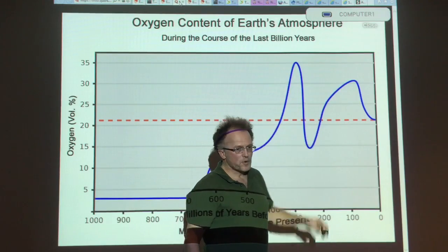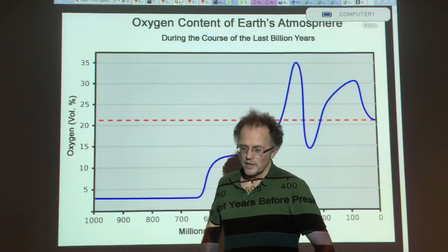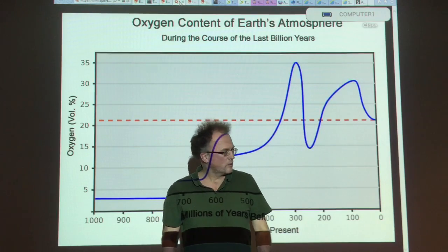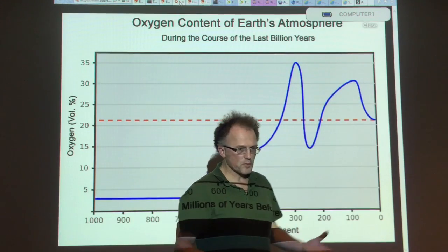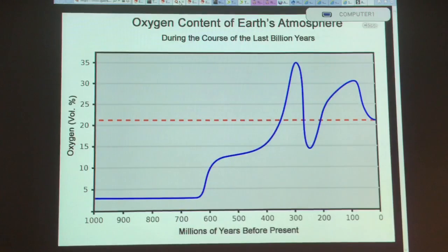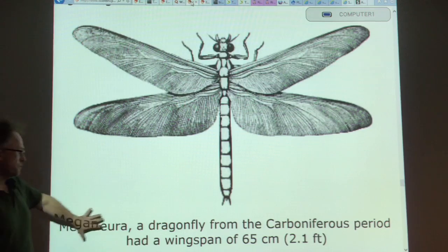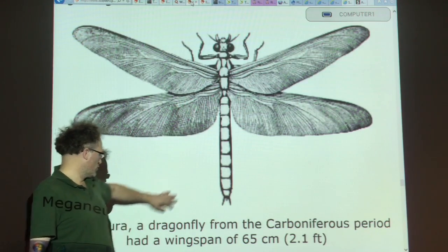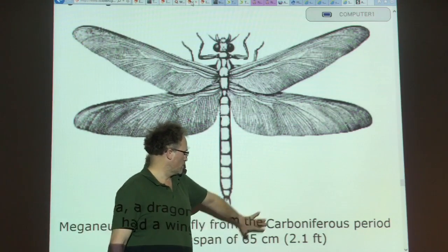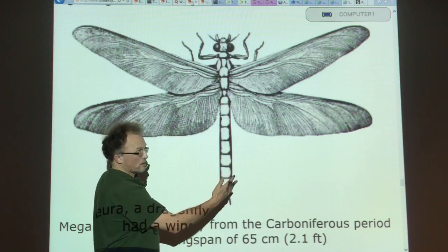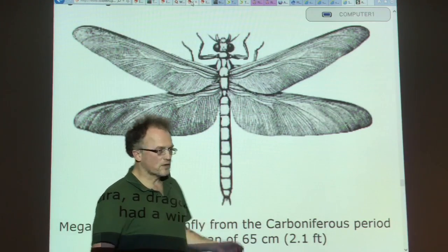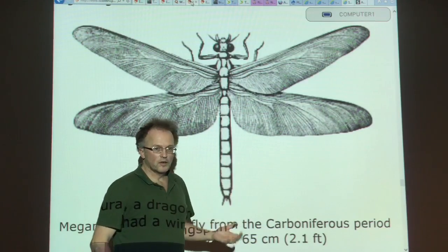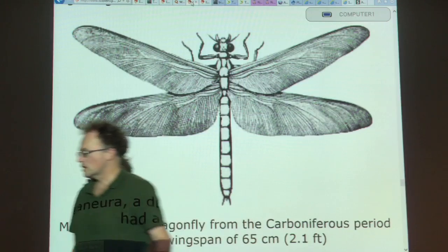Some interesting things happened during the Carboniferous. Animals were able to spend a lot less energy on metabolism because they got more oxygen from each breath. There was more in the air, so they could get much bigger and stronger. This is an example: the Meganeura dragonfly from the Carboniferous when oxygen was 35%. It had a wingspan of 65 centimeters — about 2.1 feet. Animals could be like that because of the large oxygen level.